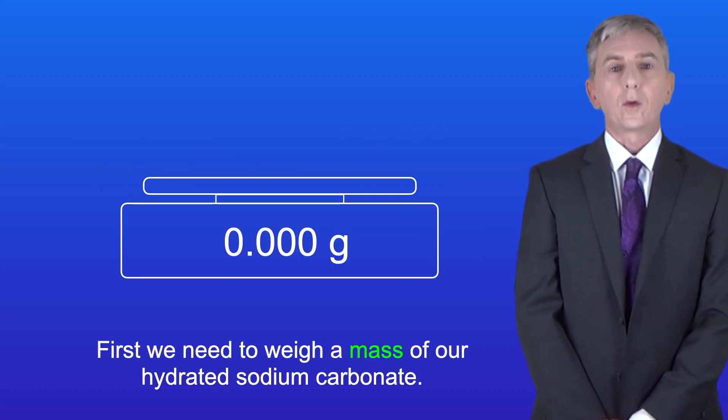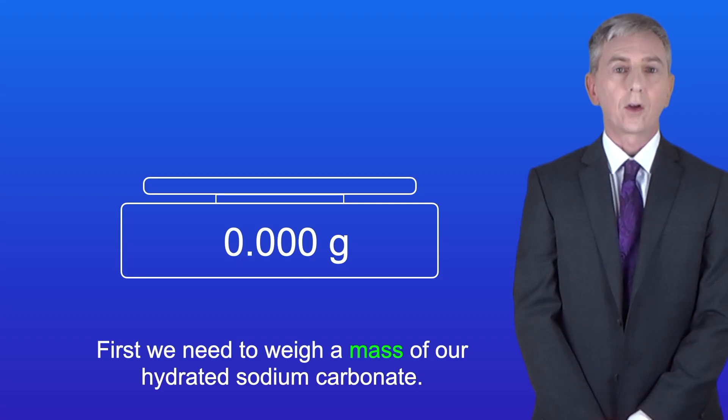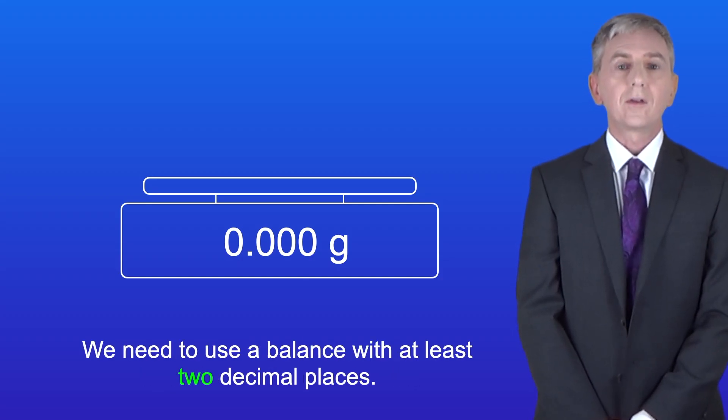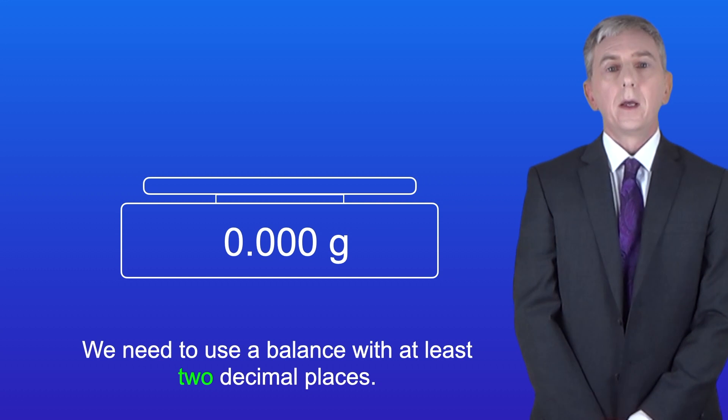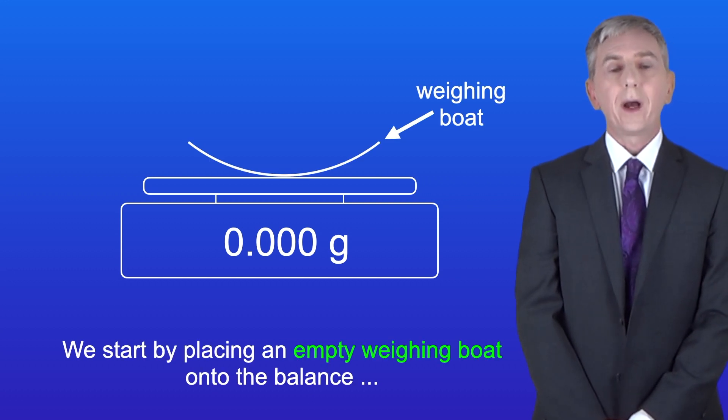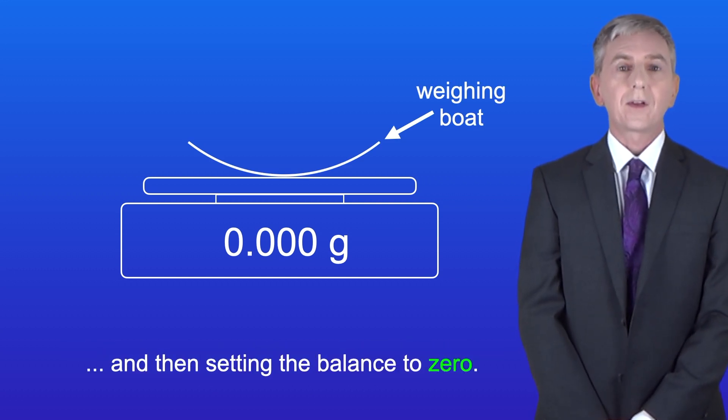So first we need to weigh a mass of our hydrated sodium carbonate. We need to use a balance with at least two decimal places. We start by placing an empty weighing boat onto the balance, and then setting the balance to zero.